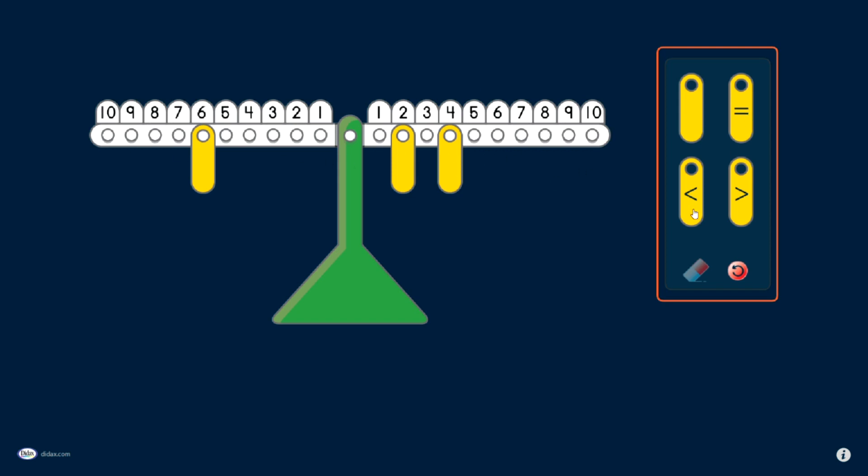I can use these symbols, the equal sign, the less than sign, and the greater than sign, by hanging them here on this middle peg. So I see that 6 is equal to 2 plus 4.